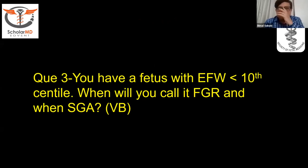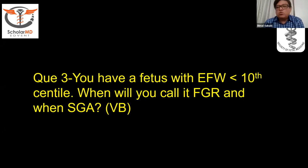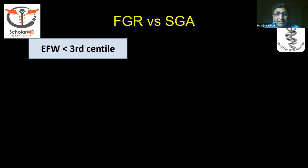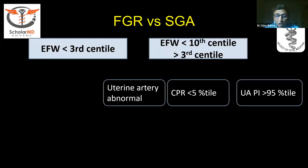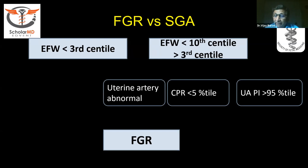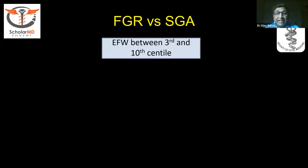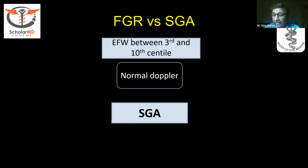So you have a small fetus with estimated fetal weight less than 10th centile. We need to differentiate between FGR and SGA. If the uterine artery is abnormal, CPR is less than the 5th percentile, or umbilical artery PI is more than the 95th percentile, we call it an FGR baby. If the estimated fetal weight is between the 3rd and 10th percentile and the Doppler is normal, we call that baby small for gestational age, which is likely to have fewer complications.